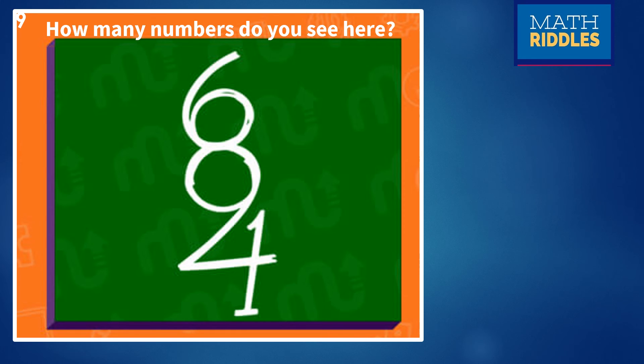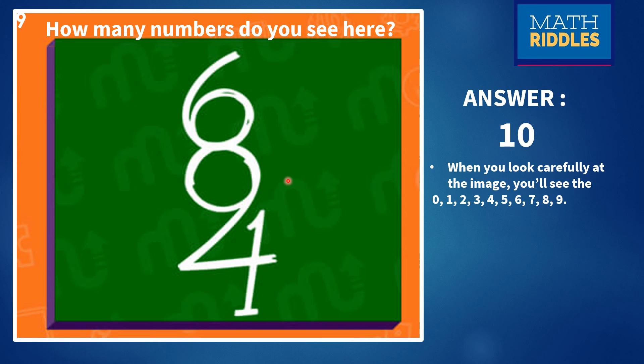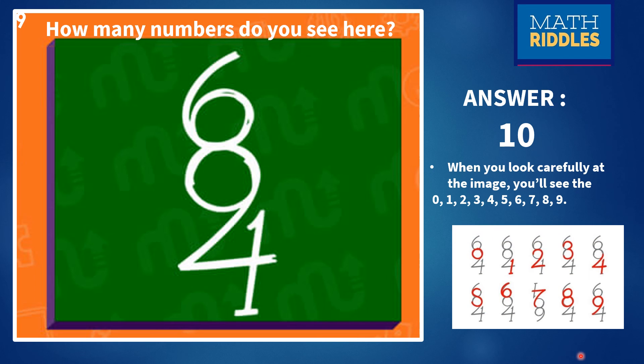The ninth question is how many numbers do you see here? You can see this picture, image. What are the numbers you can see here? You can write it in your book. You observe what are the numbers you are able to see and how many are there? You can count it and see. If you want, you can give it in the comment box also. Number 9, the answer. You can give a pause. You can find the answer. And the answer is 10 numbers you can see. That is 0 to 9 numbers. I have given the image over here. You can check what all the numbers, how it has been formed.